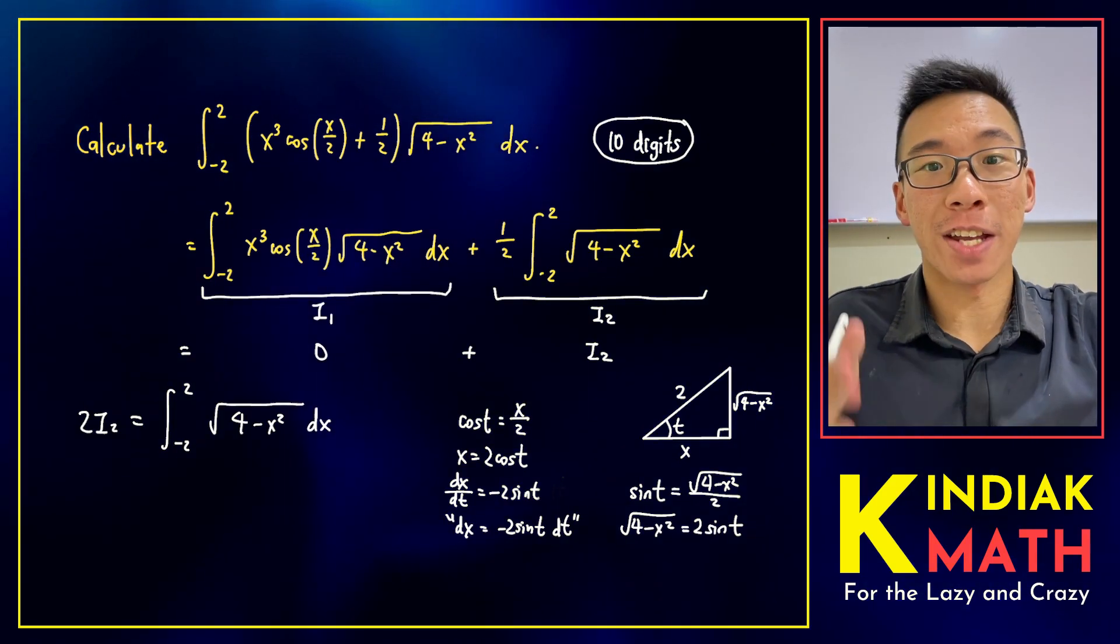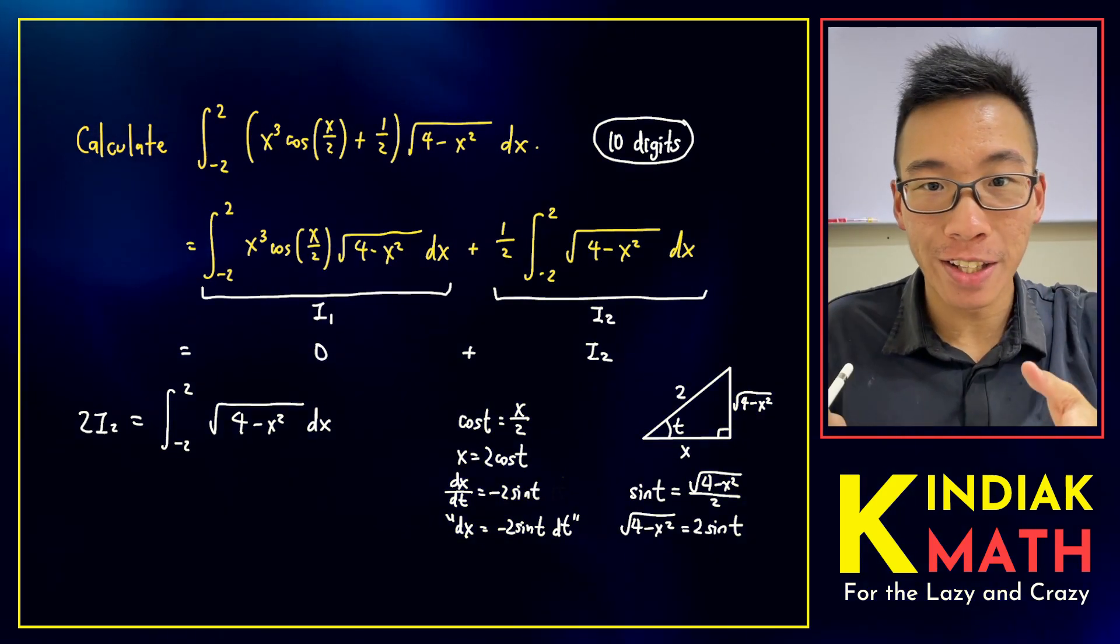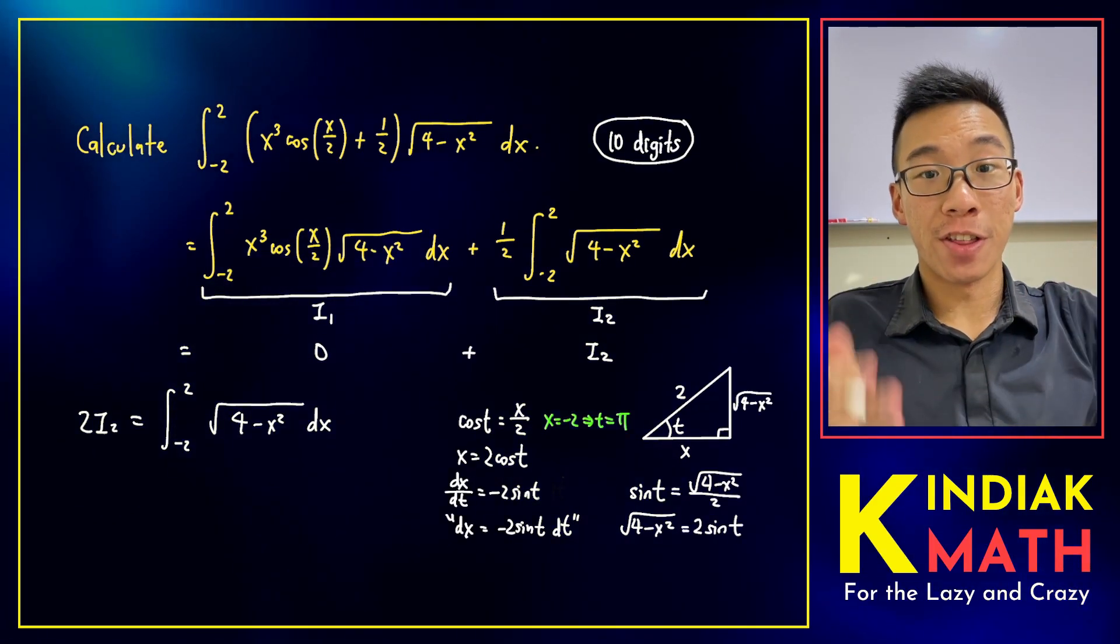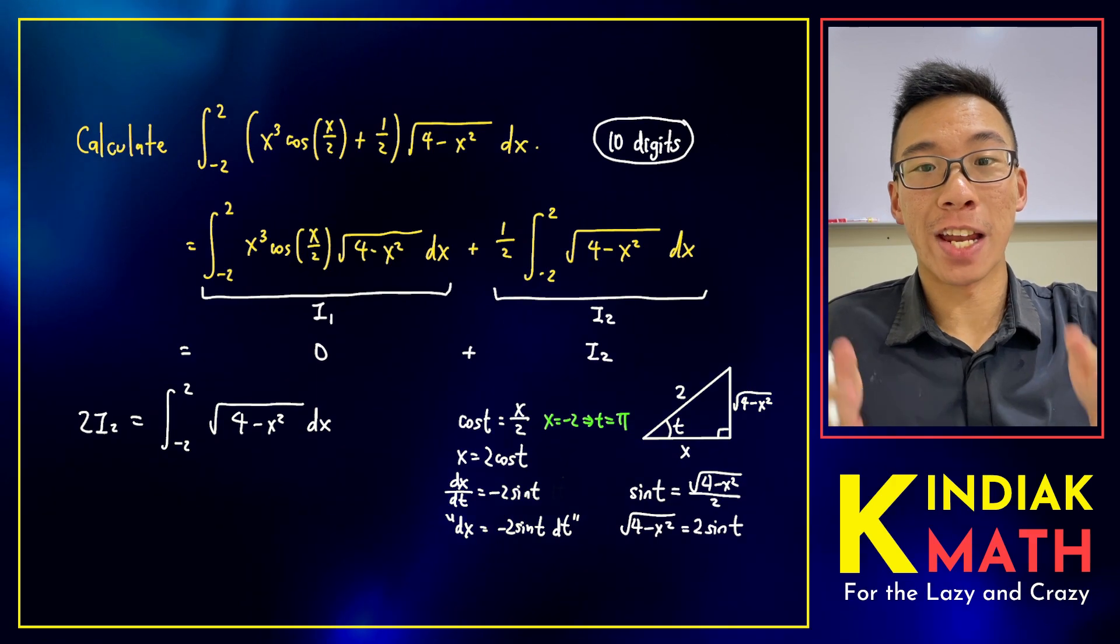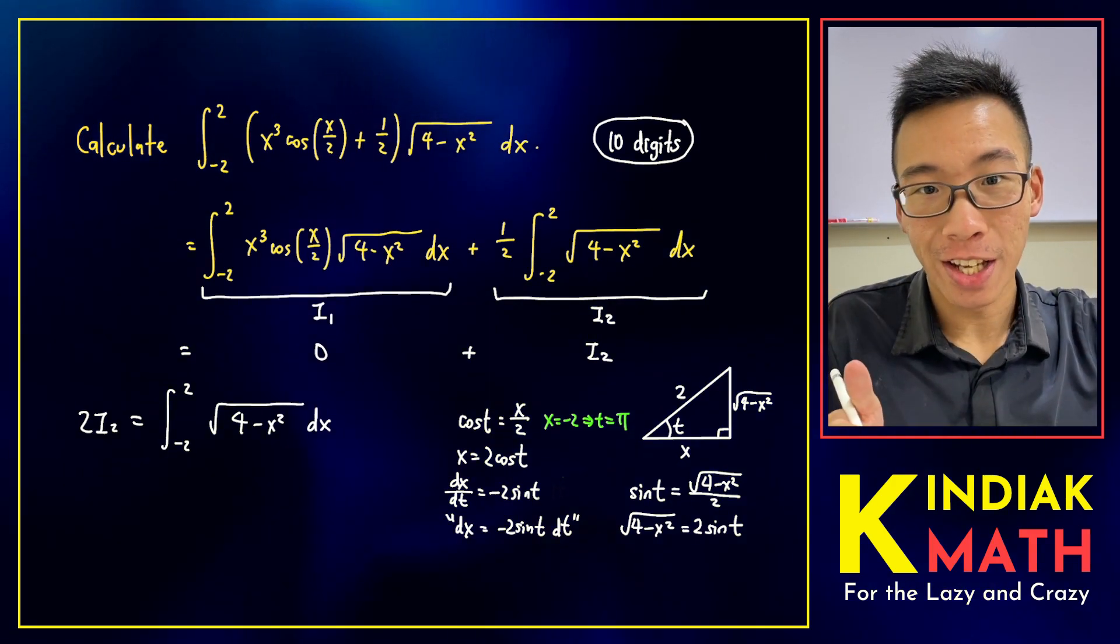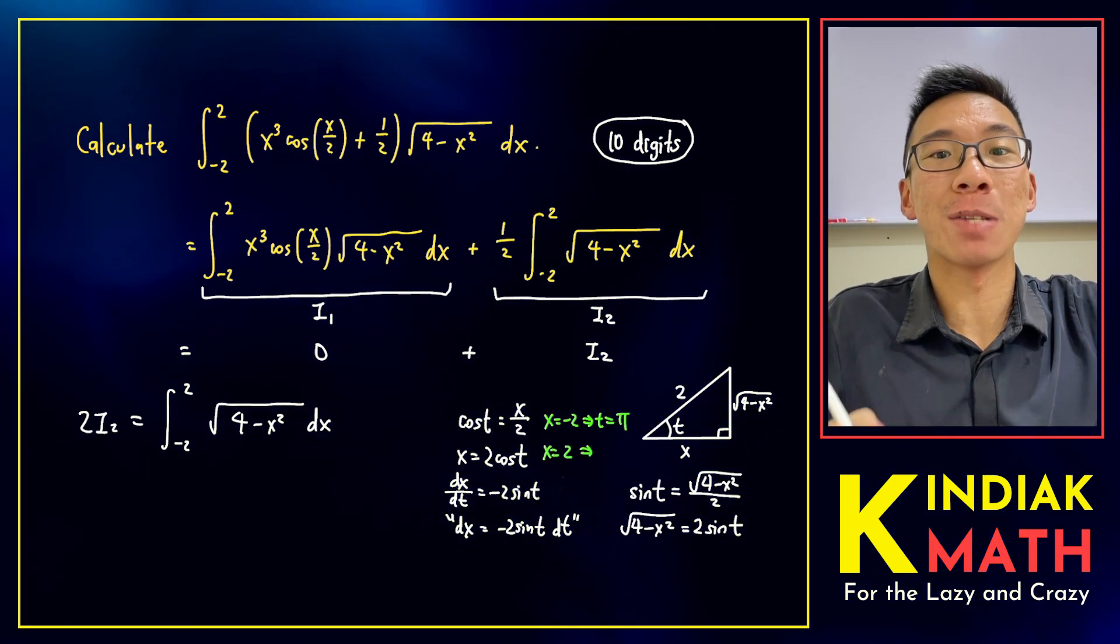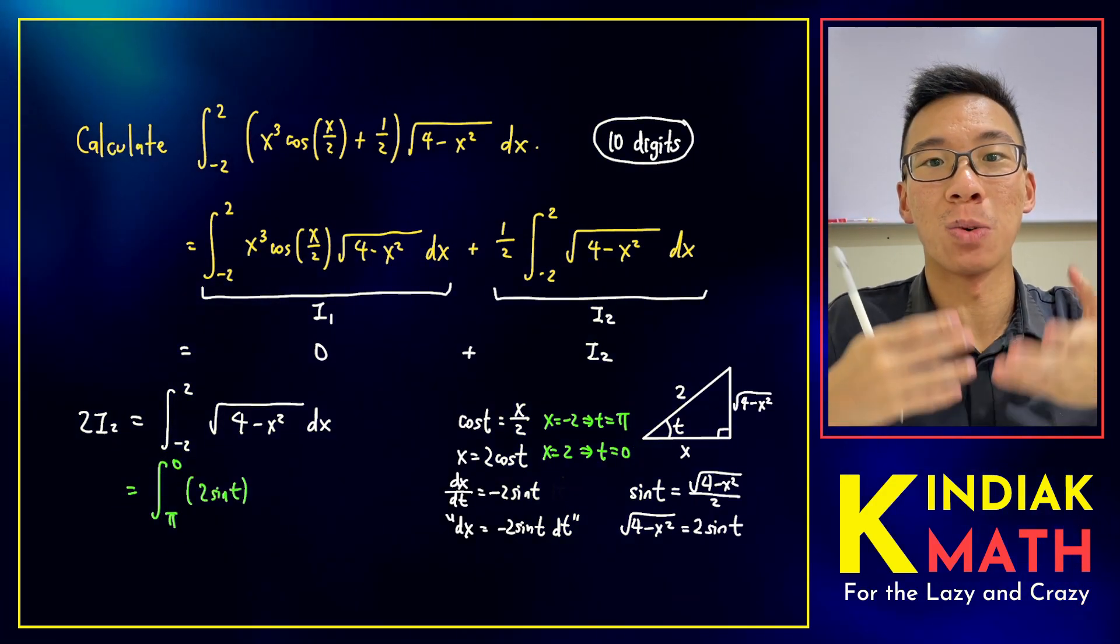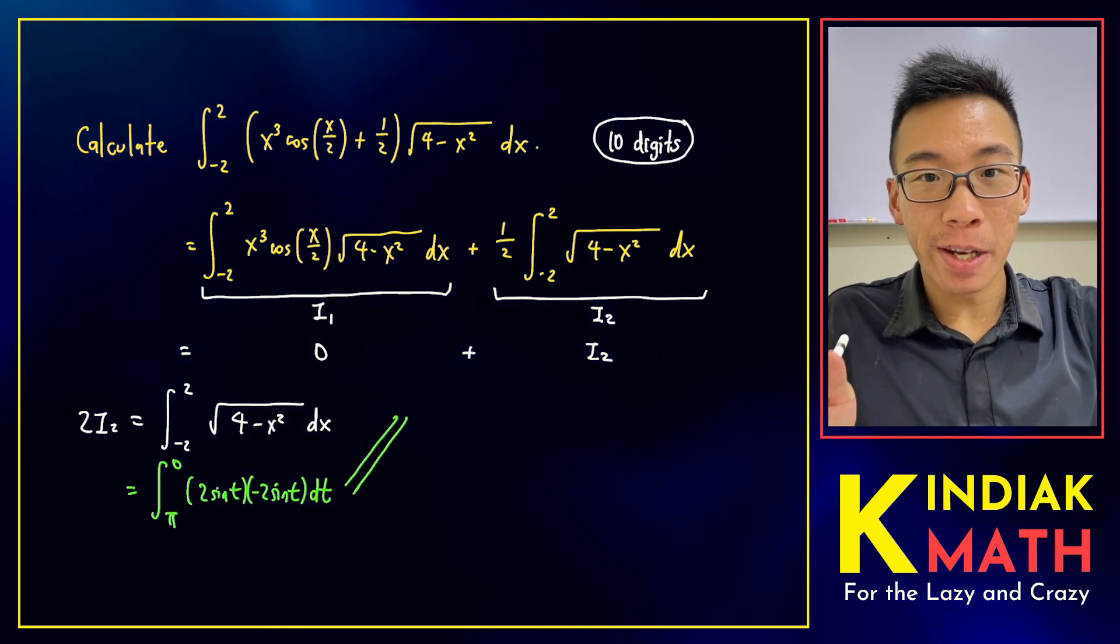Furthermore, if x is negative 2, then cosine of t is negative 1, which means that t has to be pi. And furthermore, if x equals to 2, then cosine of t must be 1, which means that t must be 0. We can substitute all of these numbers into our integral and we can clean it up with a little bit of algebra.